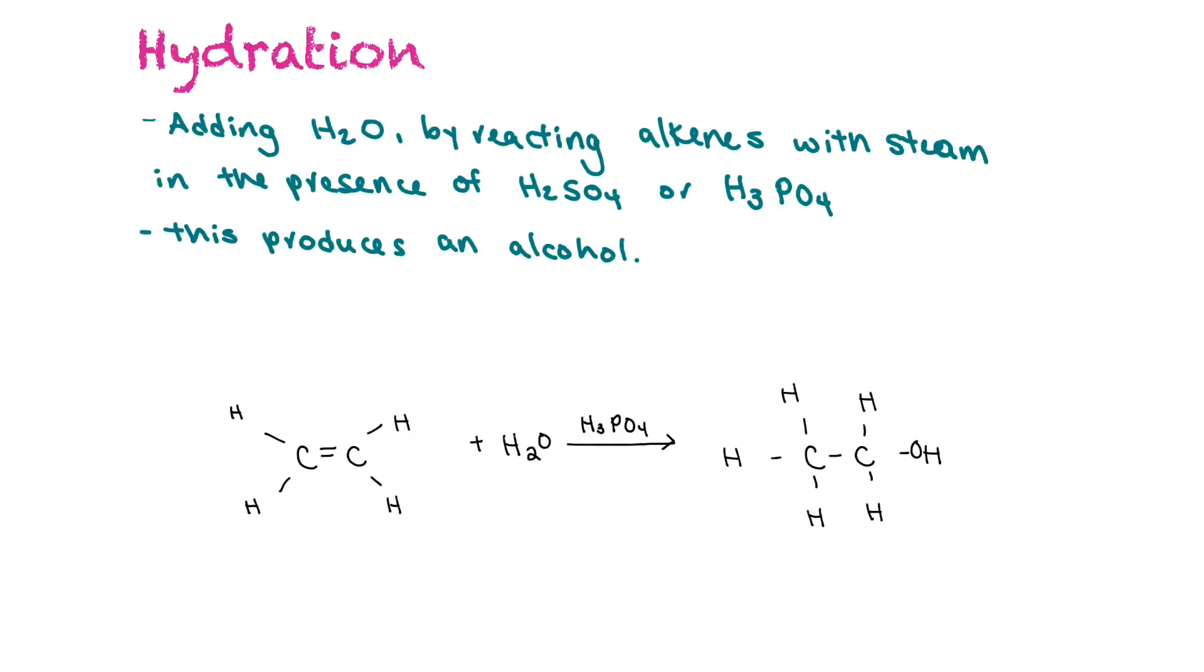So during hydration, you're adding water across the double bond. And this is done by reacting an alkene with steam in the presence of a strong acid like sulfuric or phosphoric acid. And this produces an alcohol. So if we look at this example, we have ethene again. But this time, the other reactant is water. And we end up with H3PO4 interacting. And it's happening with a high temperature because you're reacting with steam. And that's where the water is coming from. And you end up with ethanol right there.